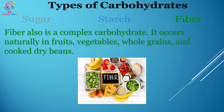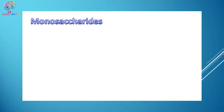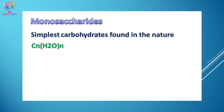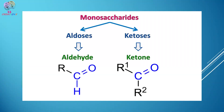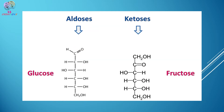Fiber is also a complex carbohydrate; it occurs naturally in fruits, vegetables, whole grains, and cooked dry beans. Now let's classify carbohydrates. Carbohydrates are classified into three subclasses: monosaccharides, oligosaccharides, and polysaccharides. 'Mono' means one and 'saccharides' means sugar, so monosaccharides are the simplest sugars containing only one sugar molecule and cannot be hydrolyzed into smaller units. They have a general formula CₙH₂ₙOₙ. Monosaccharides possess a free aldehyde or ketone group, upon which they are subdivided into aldoses or ketoses. Aldoses contain a free aldehyde group — for example, glyceraldehyde and glucose — while ketoses contain a free ketone group — for example, fructose.